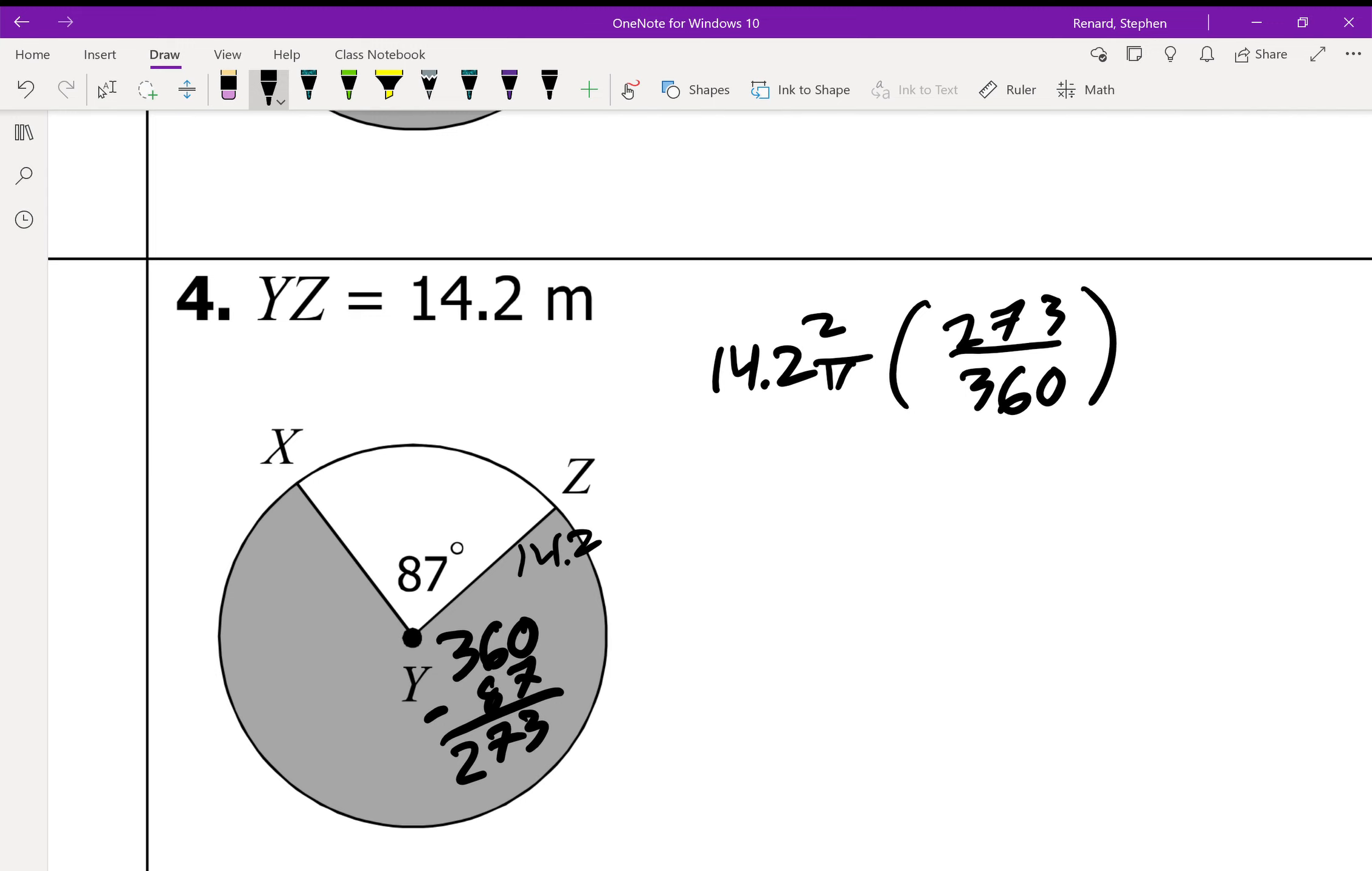And I left my calculator in my room. So, hey Google, what's 14.2 squared times pi times 273 divided by 360? Hey Google, you were so close. It was divided by 360. So do that on your calculator.